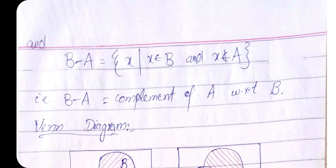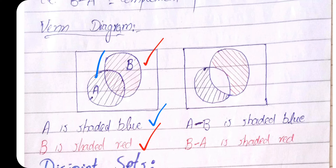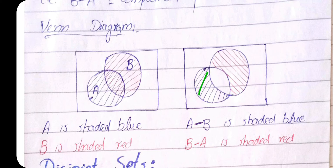On the Venn diagram, A is shaded in blue and B is shaded in red. The difference A minus B is the blue region — the part of A after subtracting the set B from A. The region shaded in red gives us B minus A, which is the part of B after subtracting all values of A from set B.